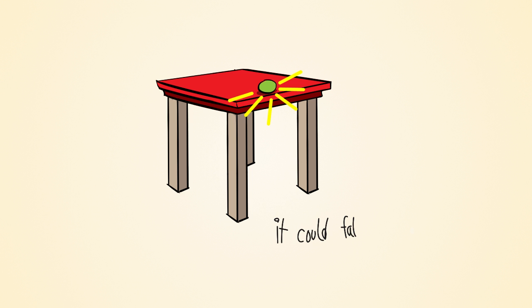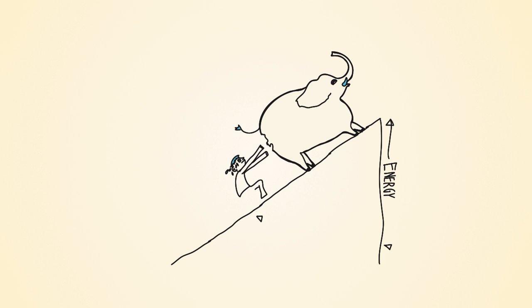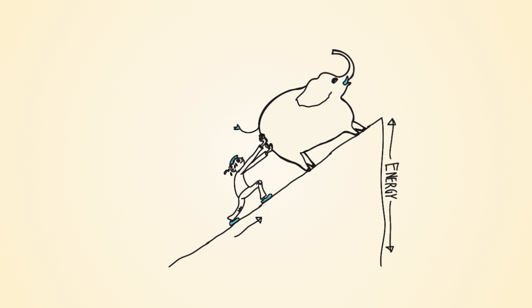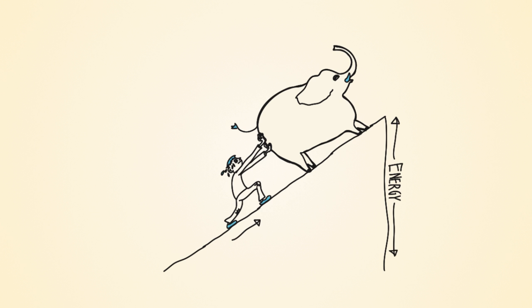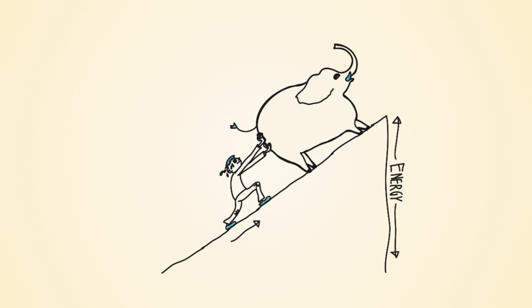One easy way is gravitational potential energy — that is to say, energy can be stored in an object by elevating it. If we push a heavy object up a slope, we know we did work, but much of the energy we put into moving the object was converted into gravitational potential energy, or the energy an object has from being elevated from one state relative to another.